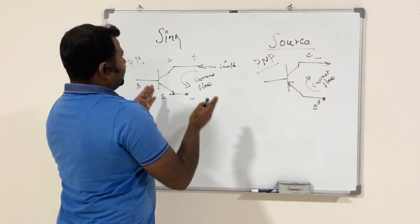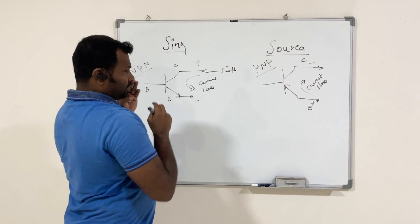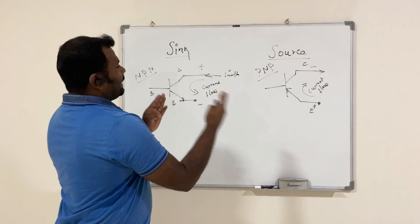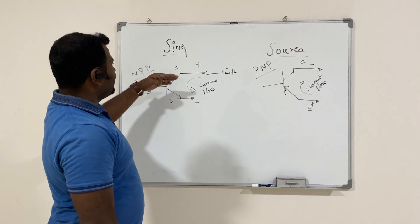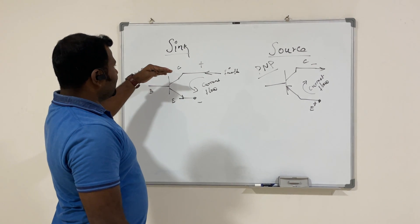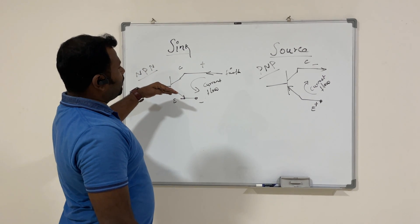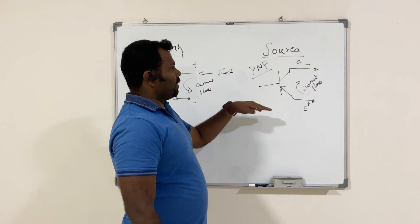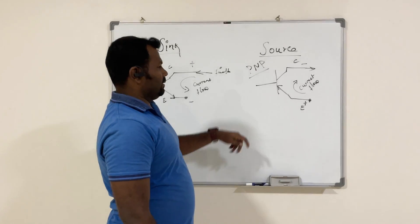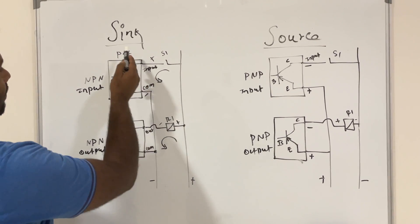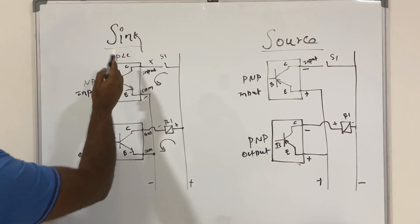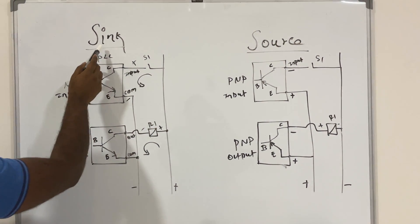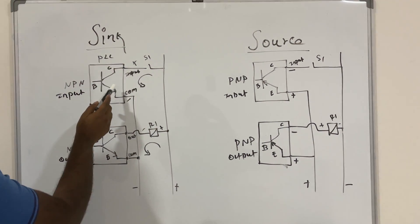Based on this current flow direction, the sink and source type I/O cards are determined. Now we will see how sink type inputs and outputs work in a PLC, then source type inputs and outputs. Here are some examples for sink type and source type I/O cards. First we will see the sink type input card.